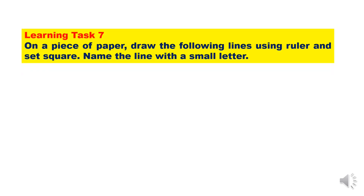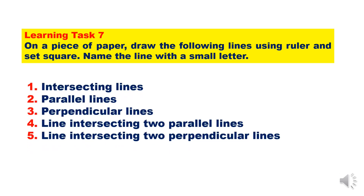For Learning Task 7, on a piece of paper, draw the following lines using a ruler and set square. Name the lines with a small letter. Number 1 — intersecting lines. Number 2 — parallel lines. Number 3 — perpendicular lines. Number 4 — a line intersecting 2 parallel lines. Number 5 — a line intersecting 2 perpendicular lines.